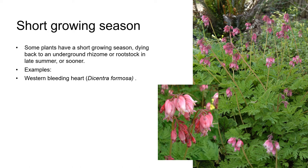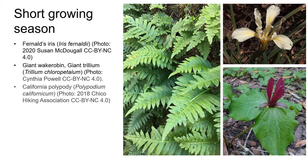Some herbaceous plants conserve energy by having a short growing season. They burst into growth with winter rains, then often die back to an underground rhizome or rootstock during the summer months. An example of a plant that does this is western bleeding heart, Dicentra formosa. Three other plants which also go dormant during the summer are Fernald's iris, Iris fernaldii, giant trillium, and the fern California polypody.